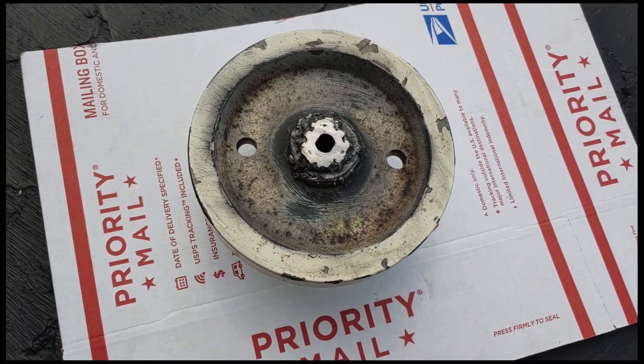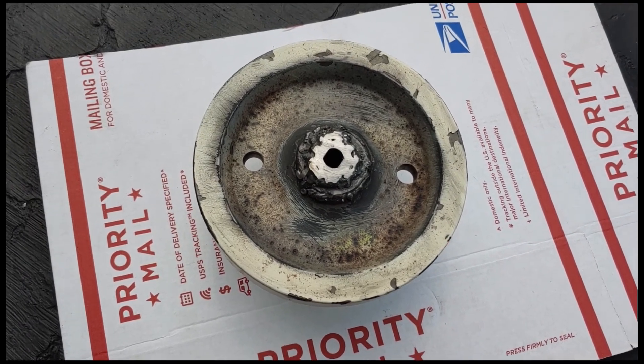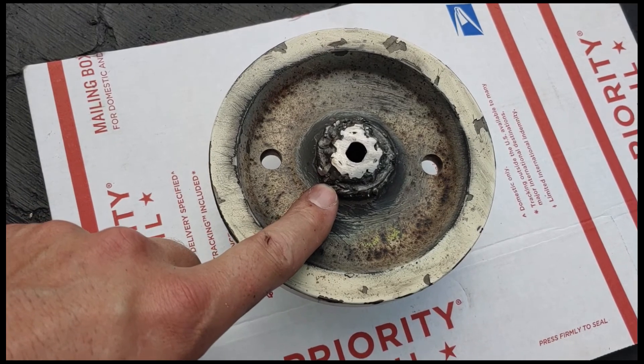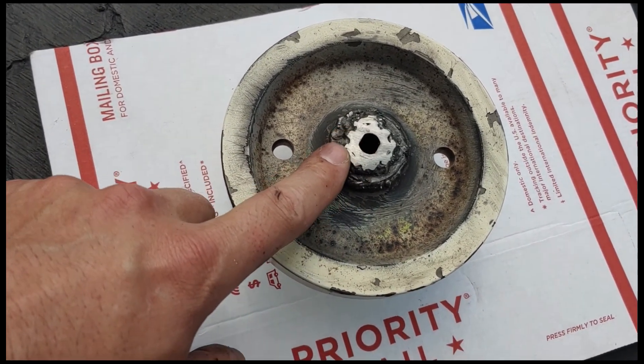Right now we are working on getting the PTO to match up to the motor. Basically what I'm doing is I welded a washer onto the PTO so it'd have a flat surface, and then I welded the gear that came off the motor to the washer.